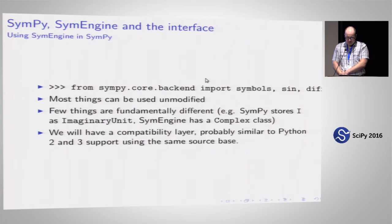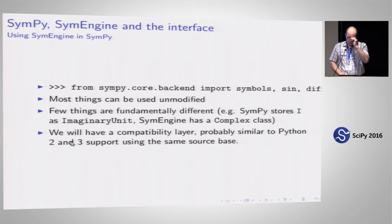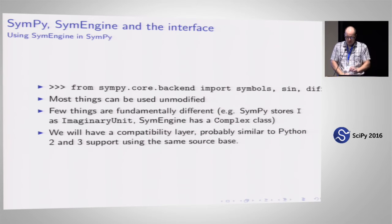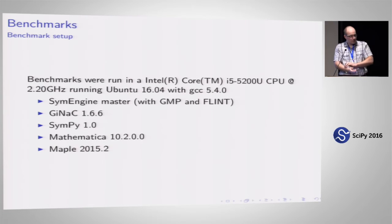A few words on how we plan to use SymEngine in SymPy. There are some structural differences — for example, in SymPy the imaginary unit is its own class and uses addition to construct complex expressions, whereas SymEngine uses a complex class which is much faster. This means they're not fully compatible, but like Python 2 and 3, you can write a compatibility layer so that the same SymPy source code works with either SymPy or SymEngine as the backend. We already have a pull request implementing that, and it works. Isru will now present the benchmarks.